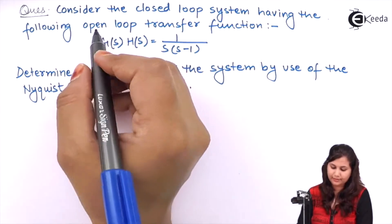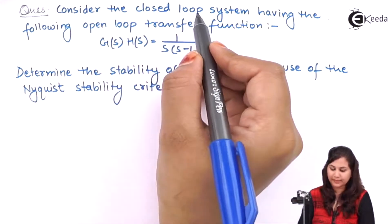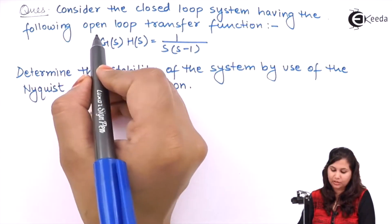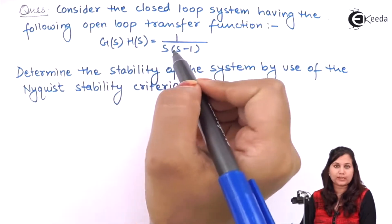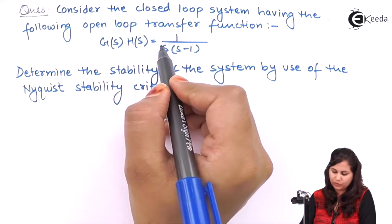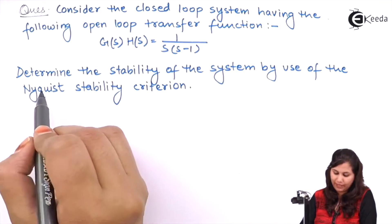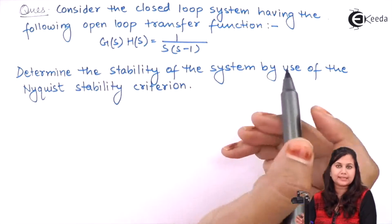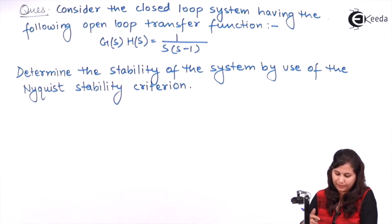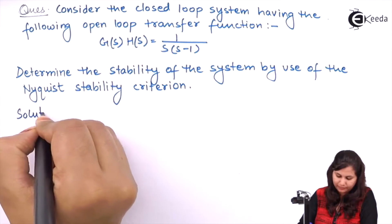Our problem is that the closed loop system is given to us which is having the open loop transfer function as G(s)H(s) = 1/(s(s-1)), and we have to determine the stability of the system using the Nyquist stability criteria. So let's try to solve this problem.